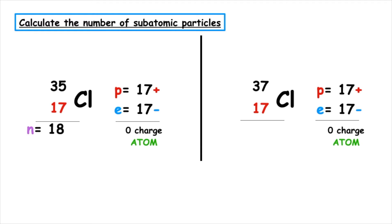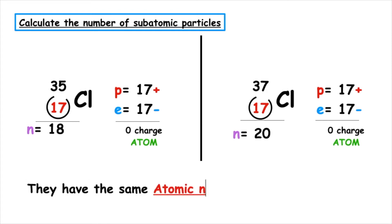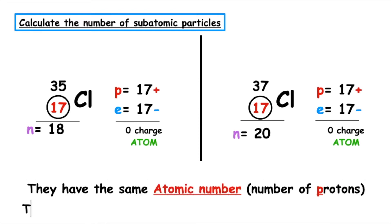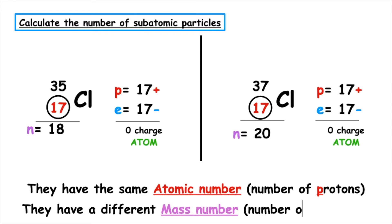When we're comparing these, which allows us to get the definition of an isotope: they have the same atomic number, which means they have the same number of protons, but they have a different mass number, which means a different number of neutrons.